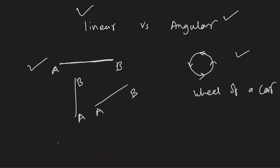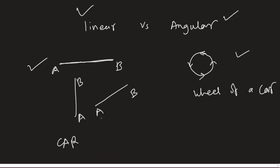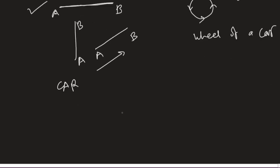And in linear motion, we can just have a car moving from point A to point B. That is called linear velocity. Now, let us find the relation between these two.